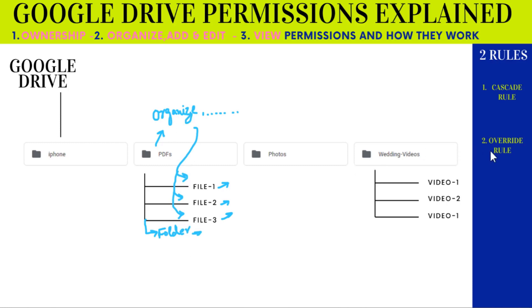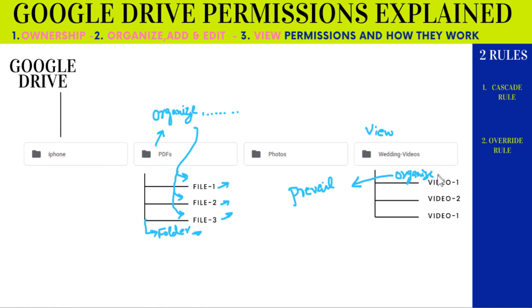The override rule means that if the folder has a lower level of permission — let's say this folder has only view permission — but one of the files or folders inside has a higher level of permission, for example this file has organize permission, then that higher permission will prevail and override the lower-level permission at the top. So that person will be able to organize this file, meaning edit it, delete it, or move it to their own Google Drive, even though the folder has only view-only permission.